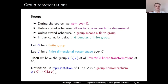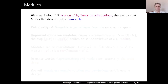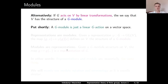There is an alternative terminology used in this context: the terminology of modules and linear group actions. If G acts on V by linear transformations, then we say that V has a structure of a G-module. Put shortly, a G-module is a linear action of a group on a vector space.